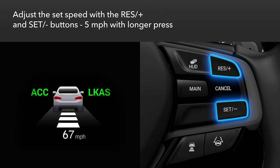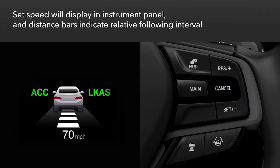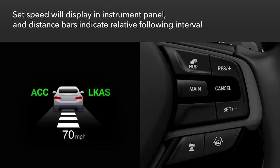A longer press on either button increases the increments to five miles per hour. The instrument panel will display the set speed as well as a vehicle icon and up to four distance bars that indicate the relative following interval.